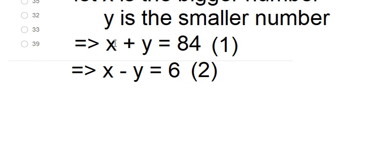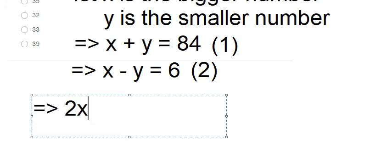First we sum two equations together because we have y and minus y, they will eliminate together and we get 2x. Why do we get 2x? Because x plus x equals 2x. Y minus y they eliminate, so we get 84 plus 6 equals 90.